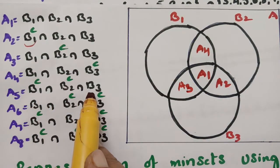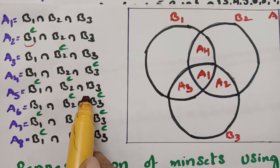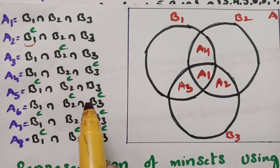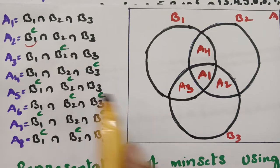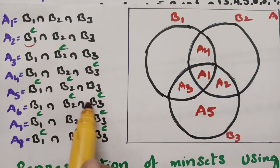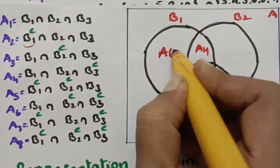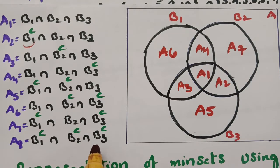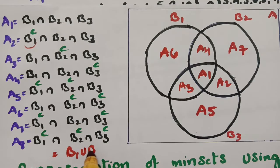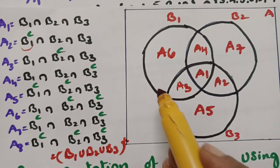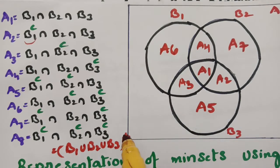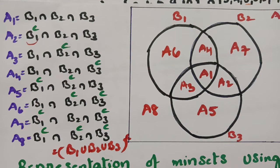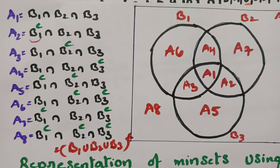For A5, it is in B3 only (without B1 or B2 overlap), so write A5 in the B3-only region. A6 is in B1 only, so write A6 there. A7 is in B2 only, so write A7 there. For A8 = B1_complement ∩ B2_complement ∩ B3_complement — by De Morgan's law, this equals the complement of (B1 ∪ B2 ∪ B3), so A8 is outside all three circles.